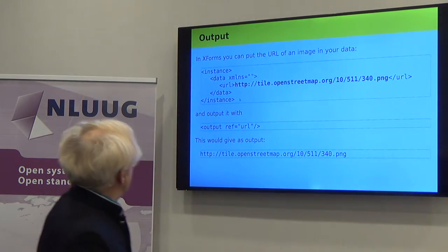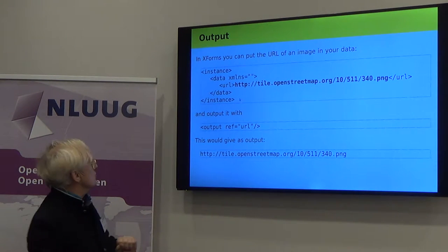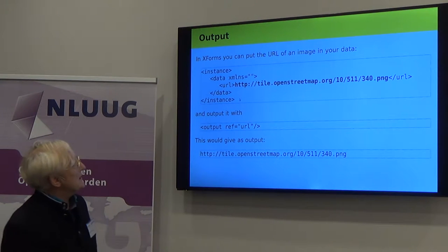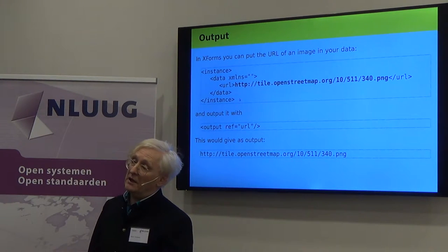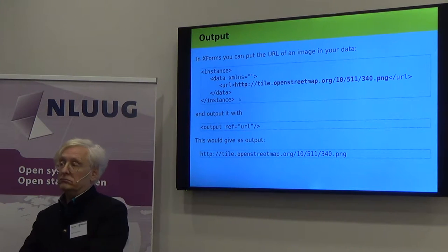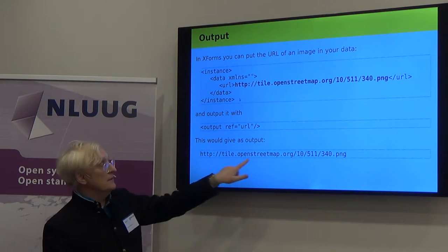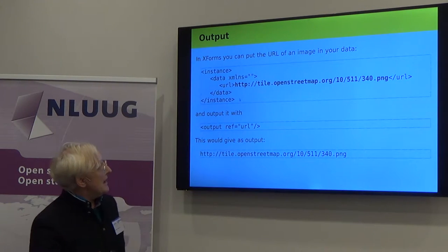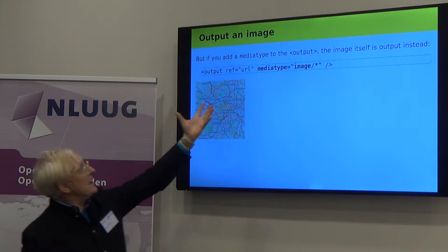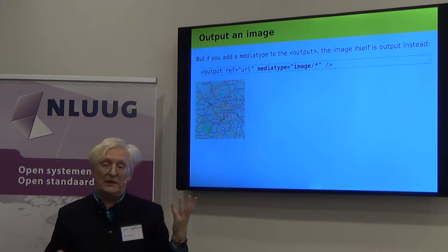Here's a very simple bit of XForms. What I've got is my data separated from my controls. All I've got is one piece of data, which is a URL pointing to a single tile at OpenStreetMap. If I output it, I just get to see this value. However, if I add media type as image/*, then this URL gets interpreted as an image and it gets displayed for me. Simple enough.